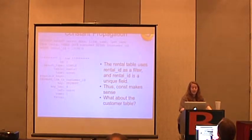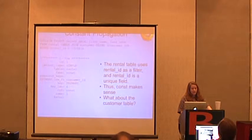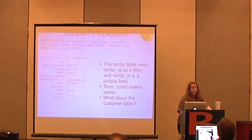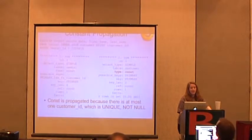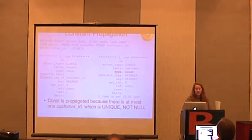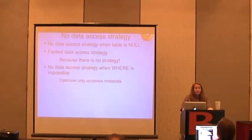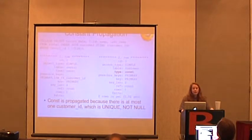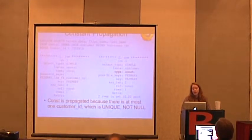There's also constant propagation. For example, EXPLAIN SELECT return_date, first_name, last_name FROM rental INNER JOIN customer USING (customer_id) WHERE rental_id = 1345. It looks at the rental table first, uses the primary key on rental_id, and reads one row. Because this is on a primary key — at most it's going to return one row — the explain plan knows it will have a constant here. This is called constant propagation. Because it's a primary key, which is unique and not null, there's at most one customer_id. So instead of doing a join, it finds the customer_id and looks up that value directly, removing the need for a join.